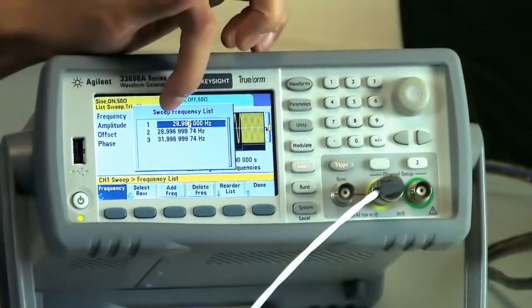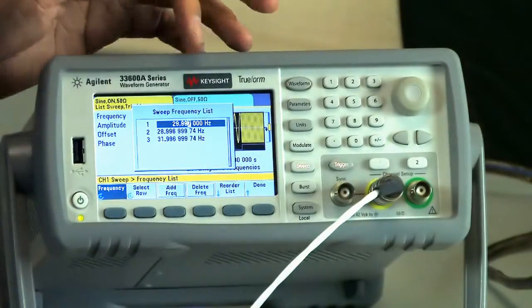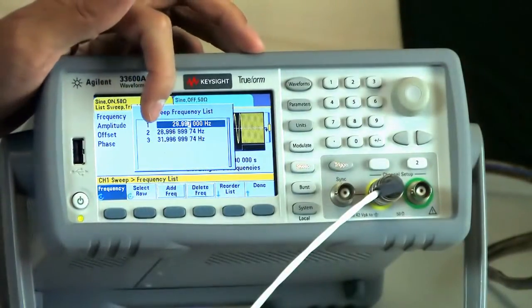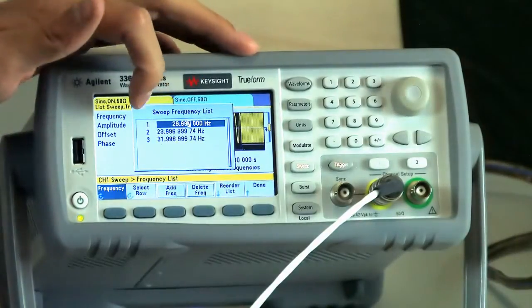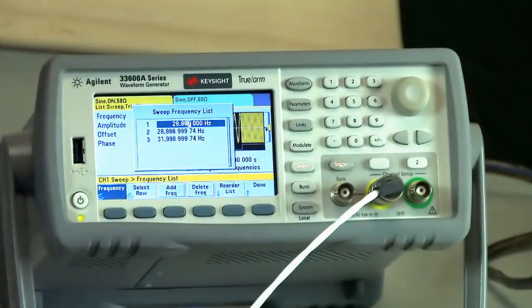The first frequency is 29.997, which is the frame rate of the camera. The next frequency is 28.996, which is going to make the water flow backwards. And then the next frequency is 31.997, which is going to make the water flow really slowly forward.